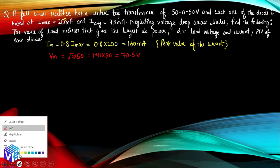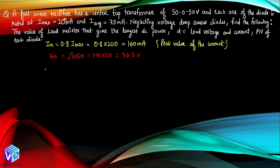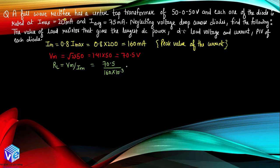Now we can find out the load resistance. This is part A. R_L will be equal to Vm upon I_m by Ohm's law. Putting the values: 70.5 upon 160 × 10⁻³. So it comes out to be equal to 440 Ohm. Taking 10⁻³ to the numerator gives 70500 divided by 160, which equals 221 Ohm. This is the load resistance.